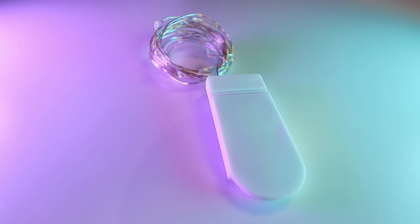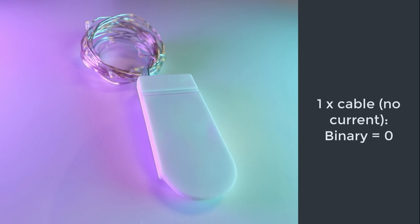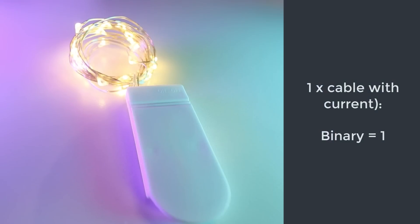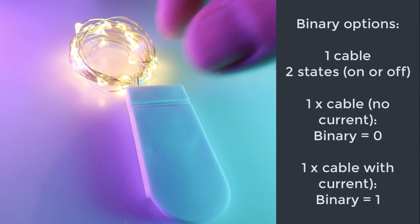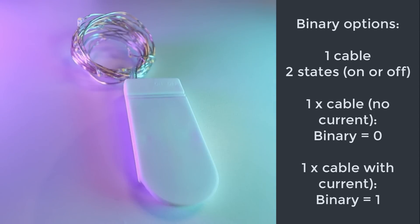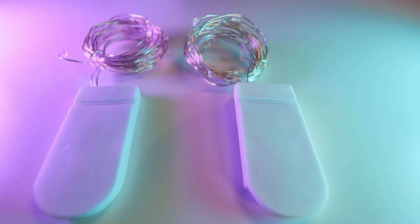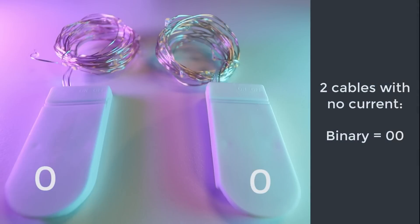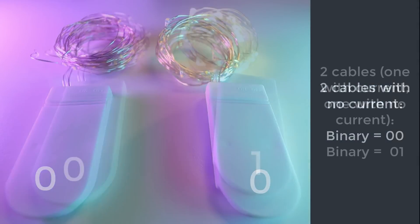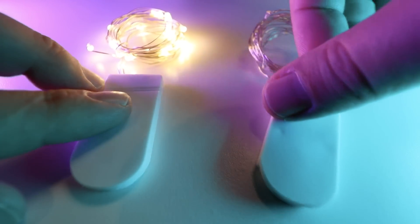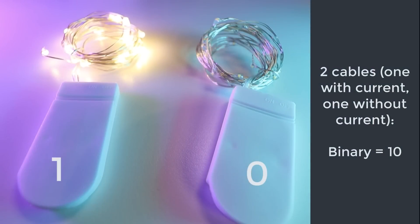This becomes really important as we scale the analogy. Here we have one cable — it's turned off, no current is flowing, so binary value is zero. If I turn it on, current is now flowing and binary value is one. We have two states: either current or no current, two binary values — zero or one. One cable, two states, either current or no current. If we extend that and we've got two cables, binary value is currently zero-zero, meaning there's no current on either cable. If I put current on one, binary value is now zero-one.